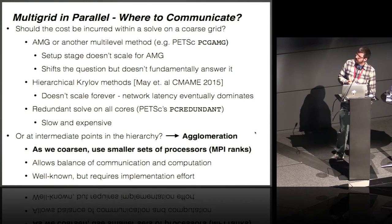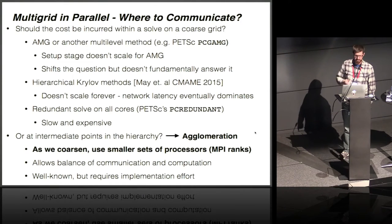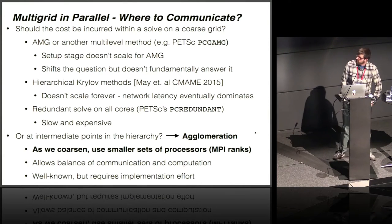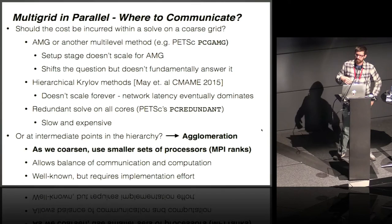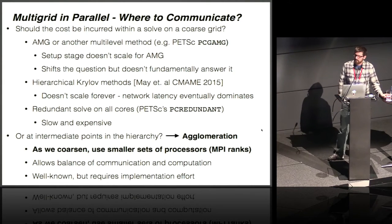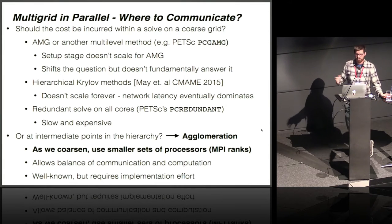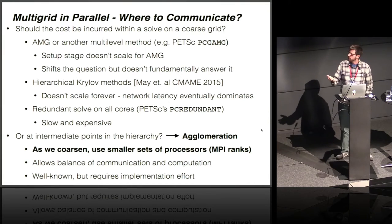There are many ways to handle this. A convenient way, from the point of view of codes using PETSC, is to drop in a scalable solver with agglomeration built in as the coarse grid solver in a truncated V-cycle. Algebraic multigrid (GAMG) works well for this, and PCBDDC also has agglomeration built in. Hierarchical Krylov methods work quite well too. Redundant solves are easy with PC Redundant, but can be inefficient. The best solution found by many researchers is agglomeration — as we coarsen the grid, we also coarsen the MPI communicator, solving on a smaller set of cores and incurring less communication cost.